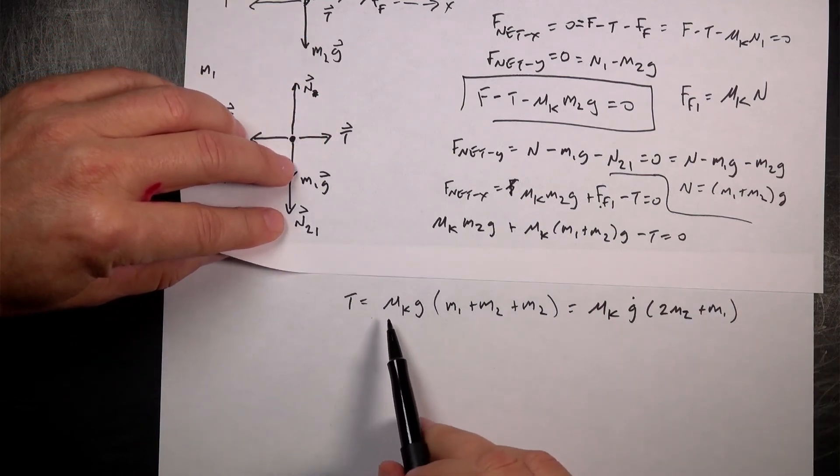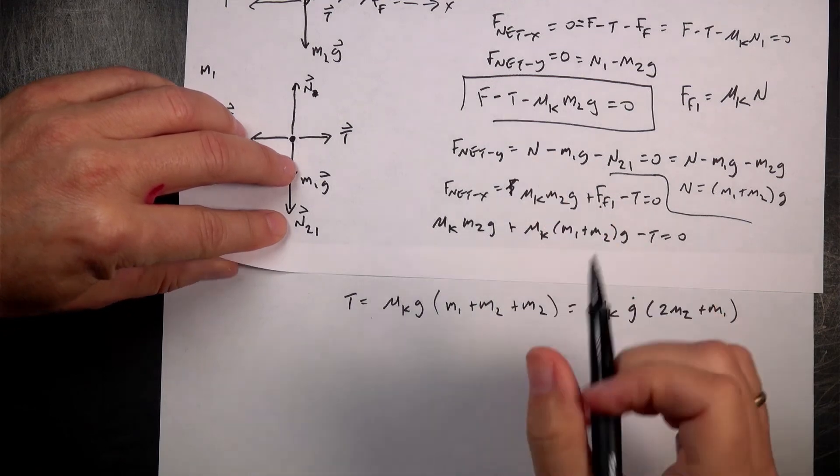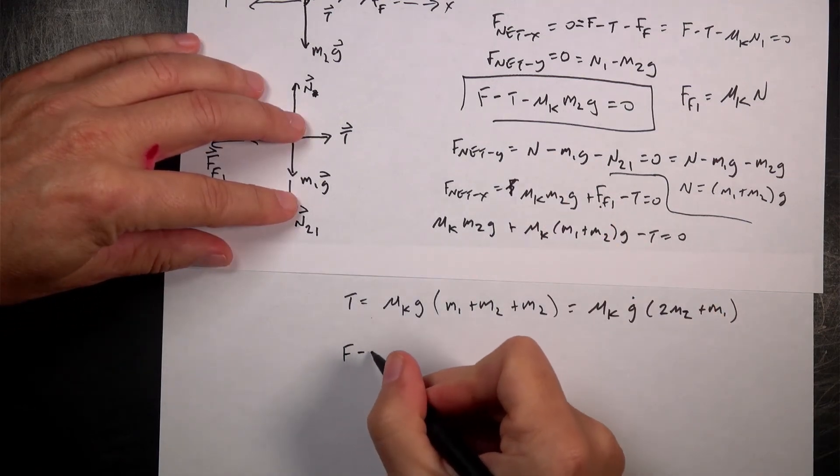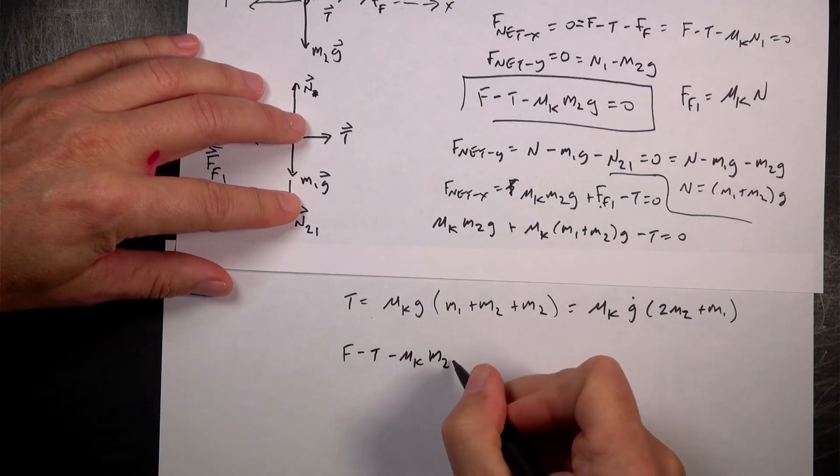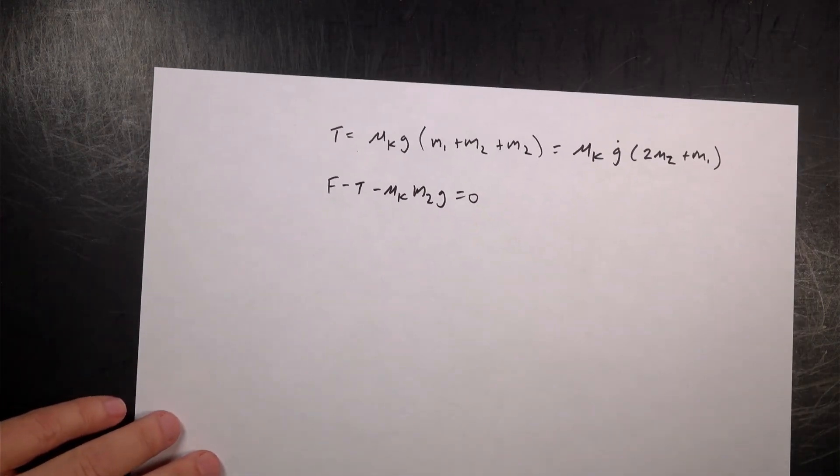So now I can take that tension and plug it into this equation. So I have F minus T minus mu K M2G equals 0. And I want to solve for M2.